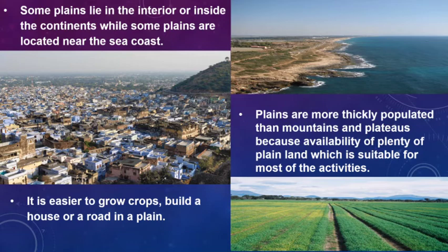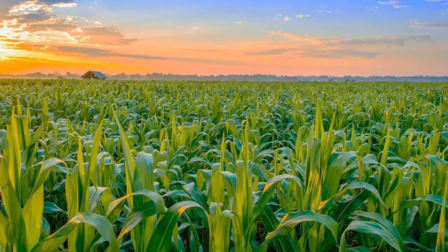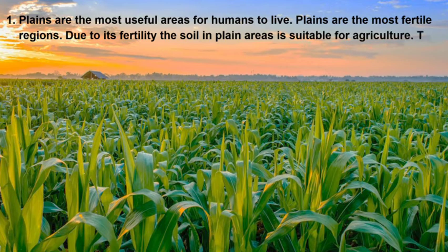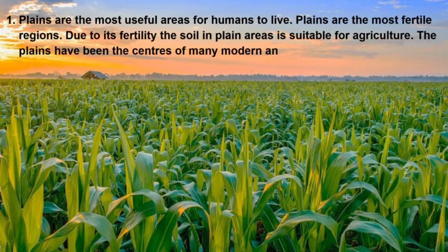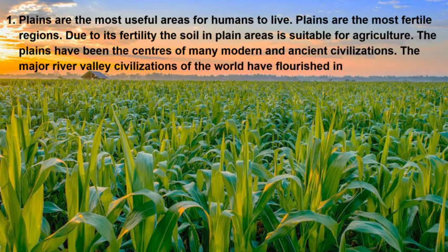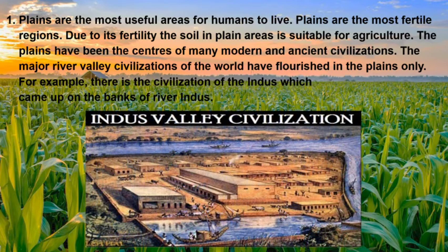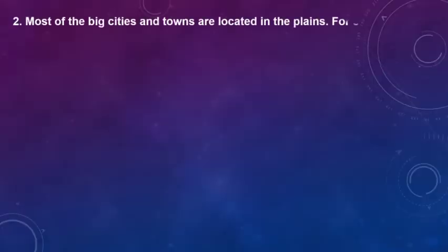It is easier to grow crops, build a house, or a road in a plain. Plains are the most useful areas for humans to live and are the most fertile regions. Due to their fertility, the soil in plain areas is suitable for agriculture. The plains have been the centers of many modern and ancient civilizations. The major river valley civilizations of the world have flourished in the plains. For example, the civilization of the Indus came up on the banks of the river Indus.